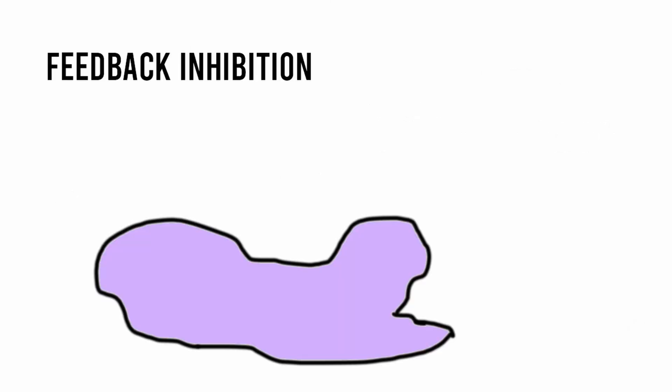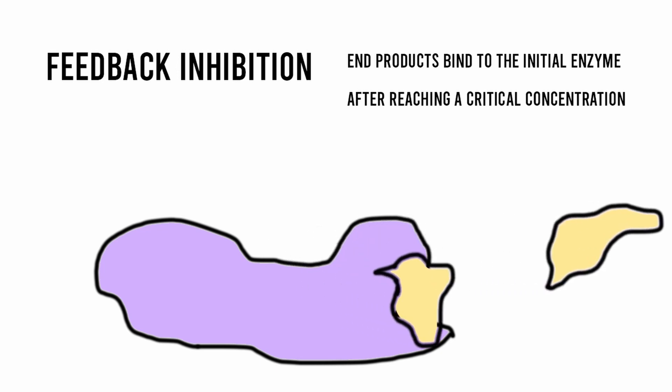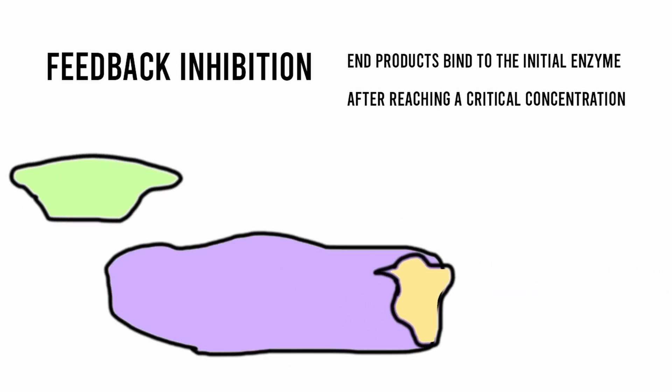Finally, feedback inhibition occurs when the end products bind to the initial enzymes after reaching a critical concentration, thus inhibiting their function.